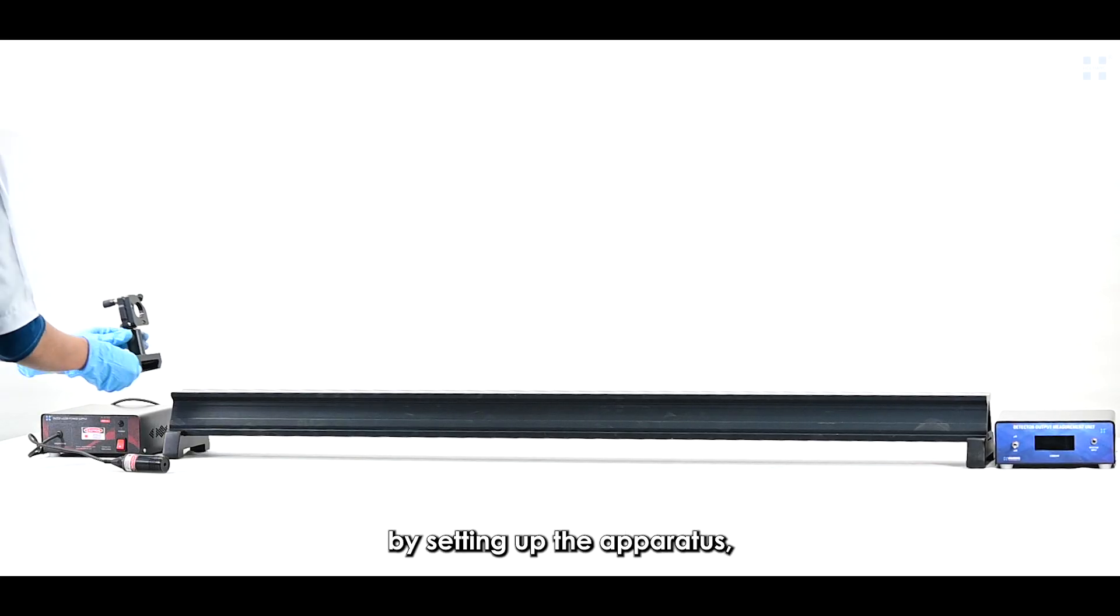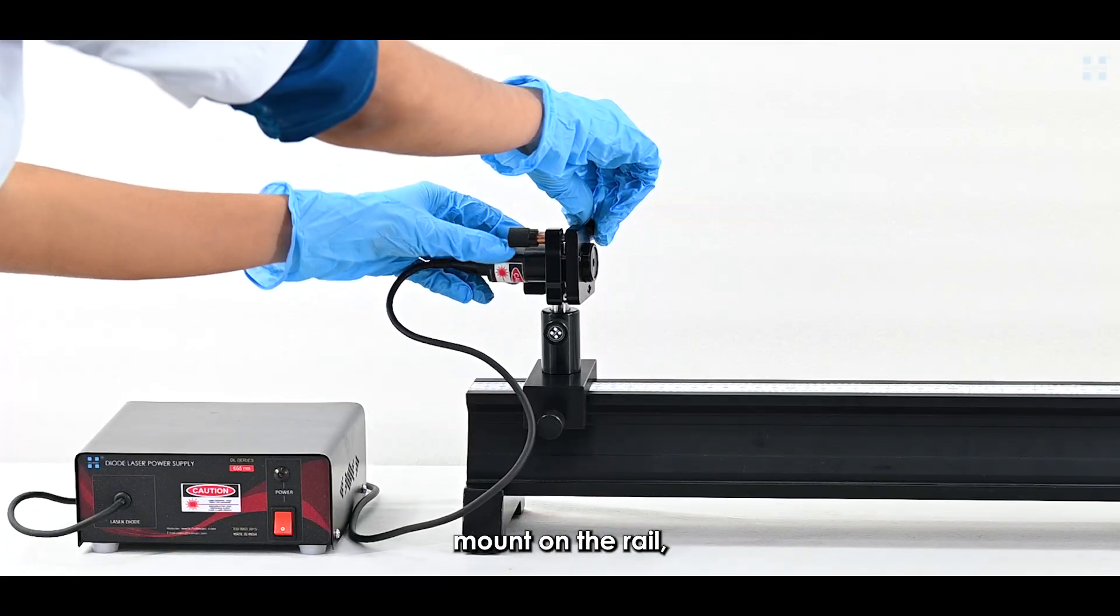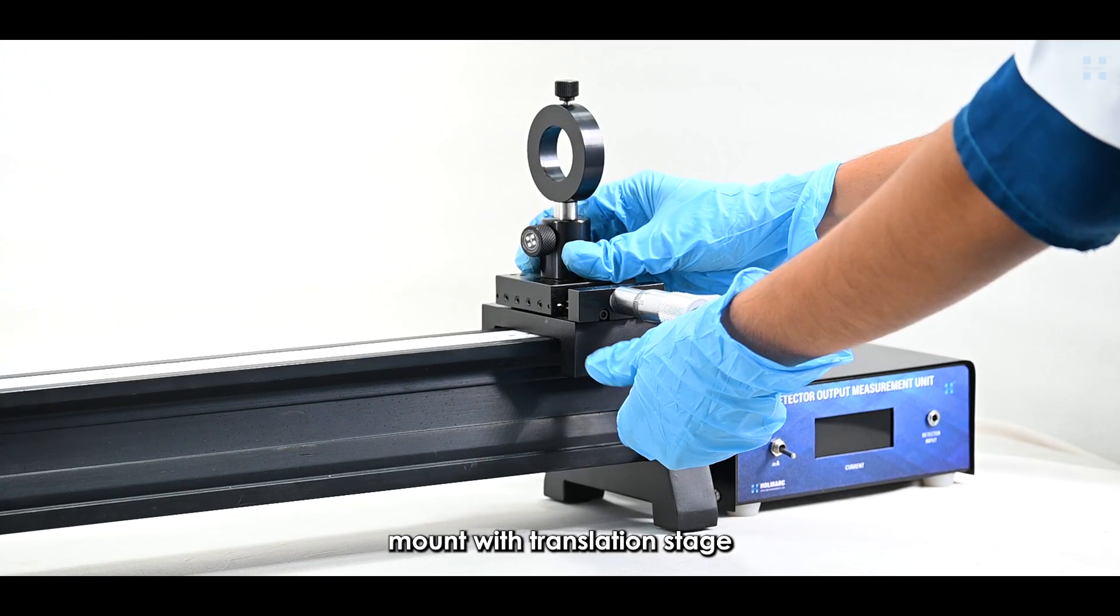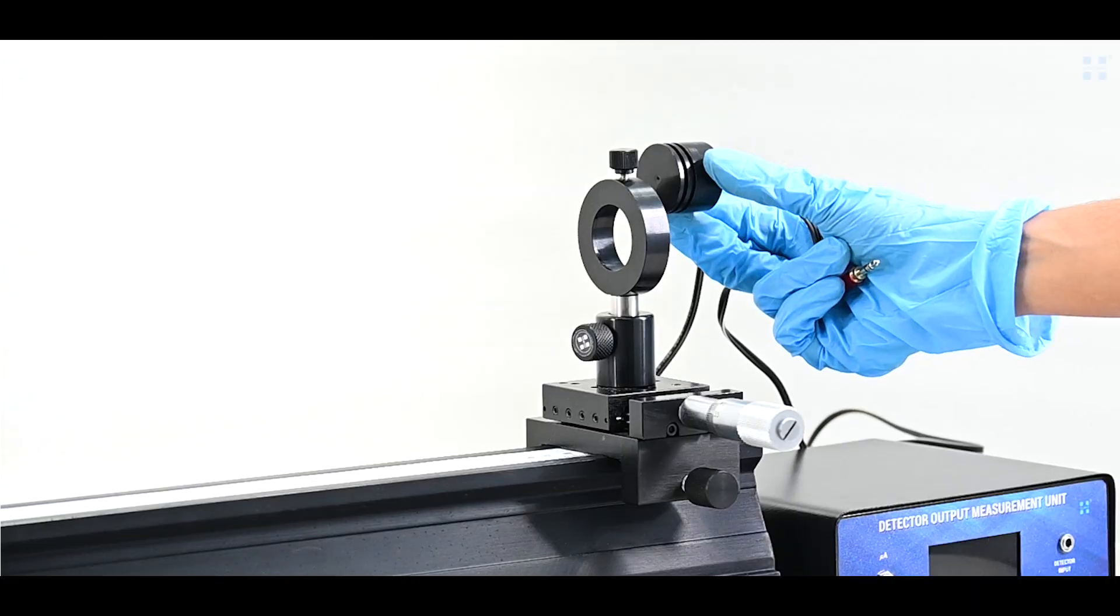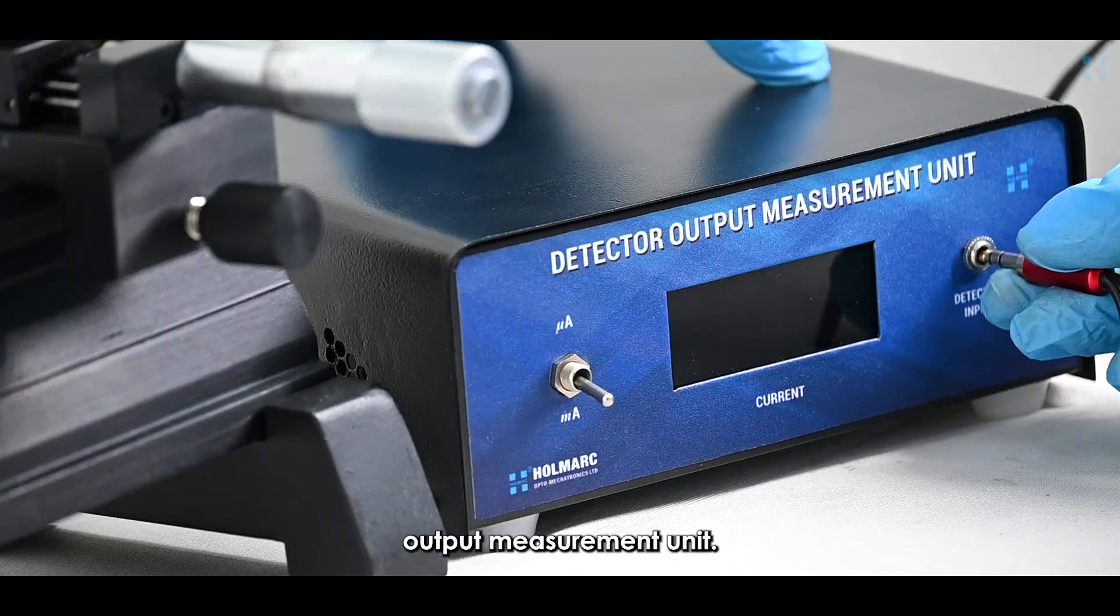The experiment begins by setting up the apparatus, which involves fixing the kinematic laser mount on the rail, inserting the laser module, and fixing the detector mount with translation stage on the other end of the rail. Mount the pinhole photodetector and connect it to the output measurement unit.